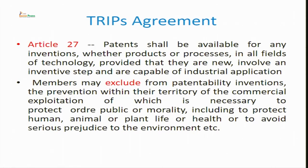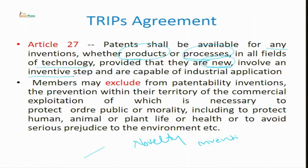Article 27 is very important relating to patent. Patent shall be available for any invention — pharmaceutical, agrochemical, or technological — both product and process, in all fields of technology, provided they are new. Conditions under Article 27: novelty must be there, an inventive step must be involved, some utility must be present, and it must be capable of industrial application. Non-obviousness must be there.